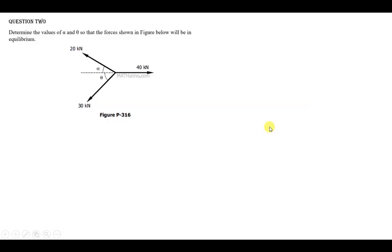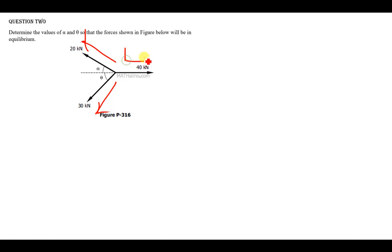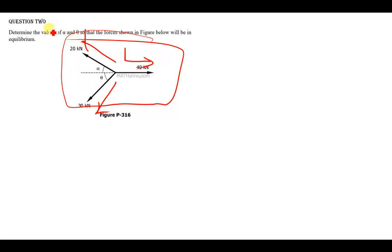Let's quickly begin. Question two says: determine the values of alpha and theta so that the forces shown in the figure will be in equilibrium. So when this force moving this side and this force moving this side are added together, they are supposed to give us this one for the forces to be in equilibrium.